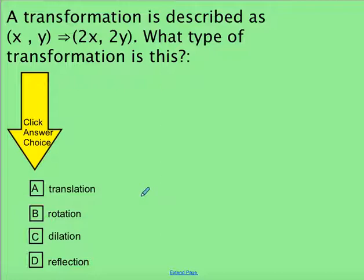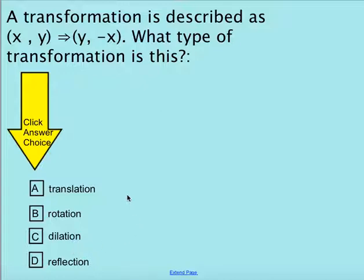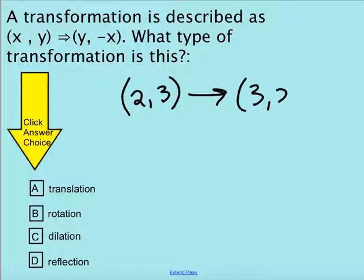What transformation is x, y going to 2x, 2y? Taking a point like 5, 2 — it becomes 10, 4. That's not going to keep the same size of shape, so this is a dilation. And lastly, if x, y goes to negative y, x — taking 2, 3, it becomes 3, 2 and then we make x negative. Whenever you see those x and y flipped, we're talking about a rotation.